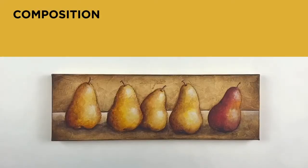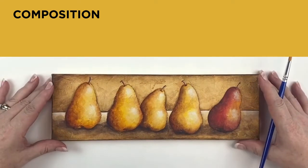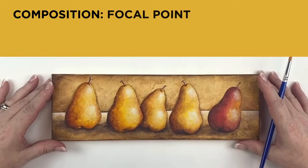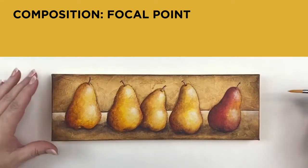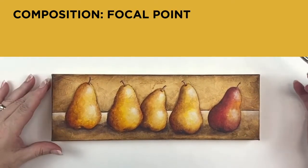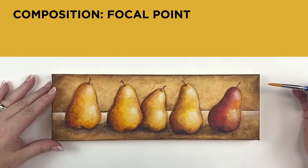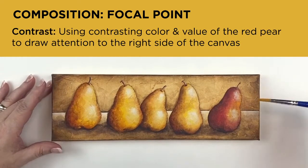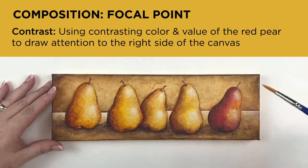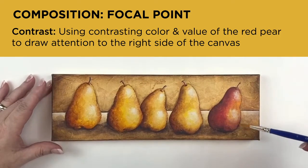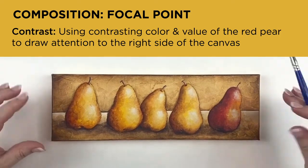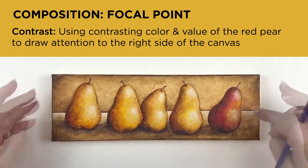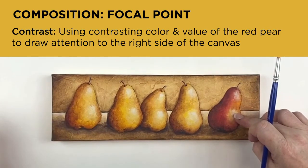Let's talk about composition. There's a variety of things that go into composition, but we're going to focus on focal point. There are a number of different ways to create a focal point in artwork. In this particular case we're using contrast — both color, value, and placement to make this the focal point within this painting.